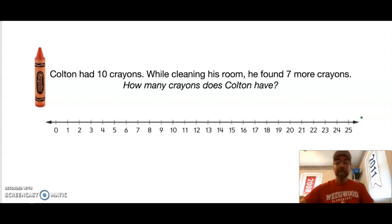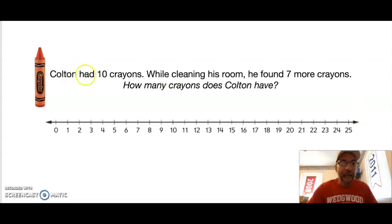Let's try another one. You might want to erase your sheet protector or you can use the number line that's right below it. This story is about my friend Colton. Colton had 10 crayons. While cleaning his room, he found 7 more crayons. How many crayons does Colton have? I like to circle my numbers—we have 10 and we have 7. I'm going to put a dot where my larger number is, and my larger number is 10, so I'm going to start at 10.